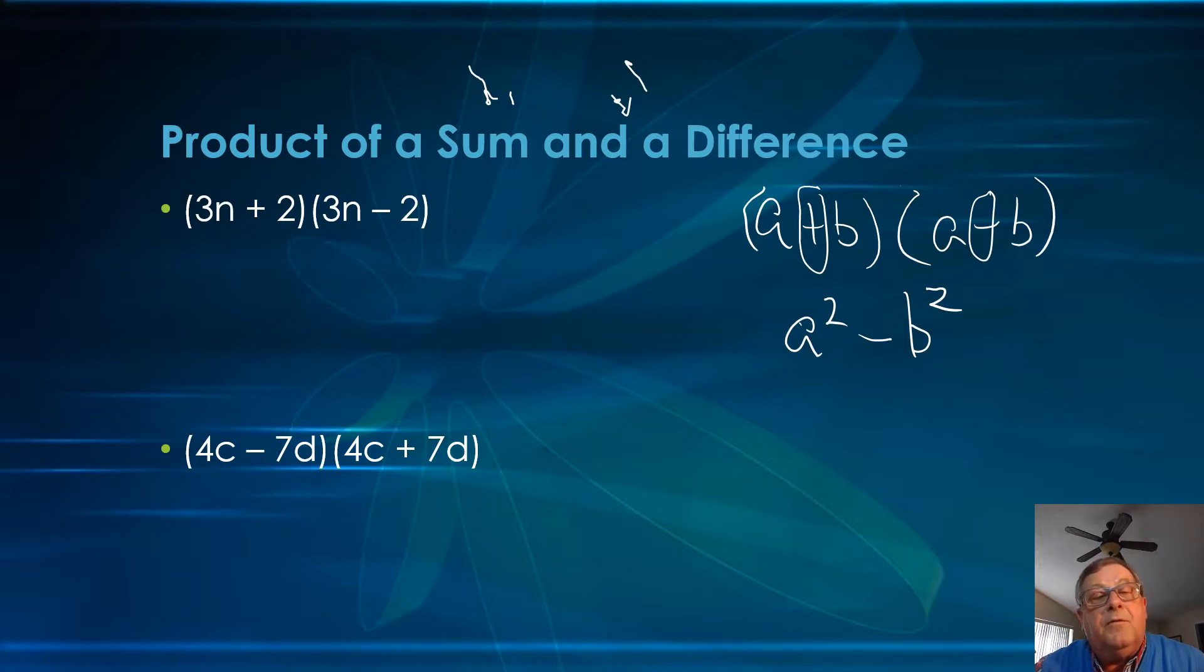We can simply go by this and say, 3n times 3n is 9n squared, minus 2 times 2, or b squared, minus 4.